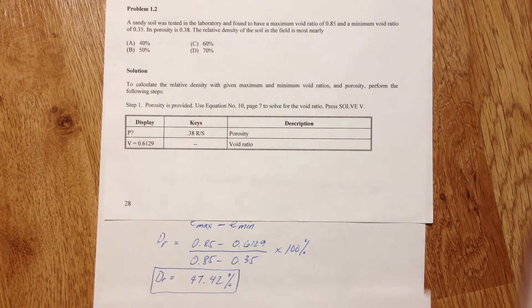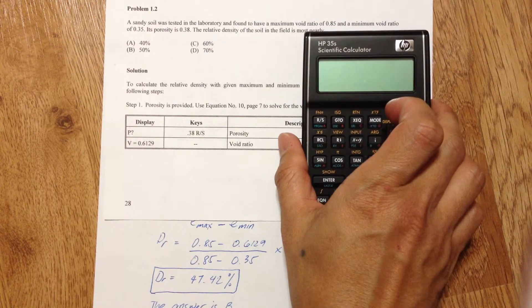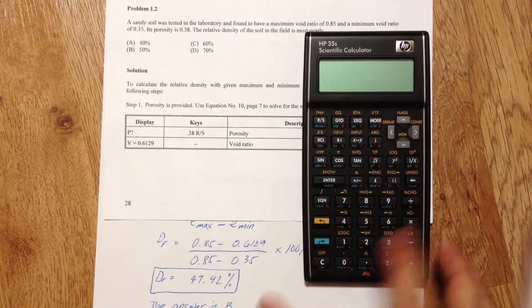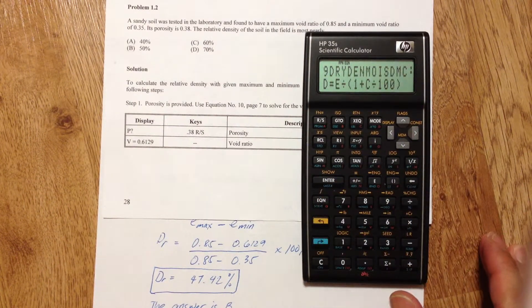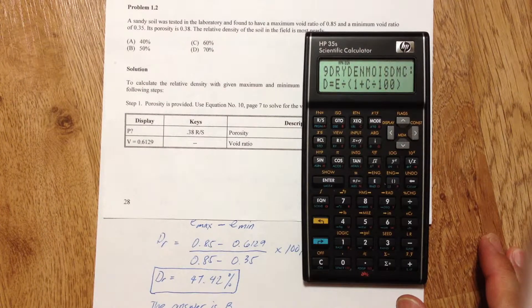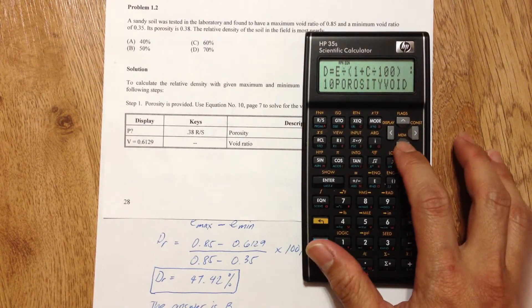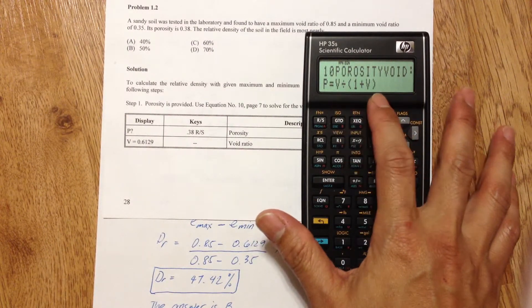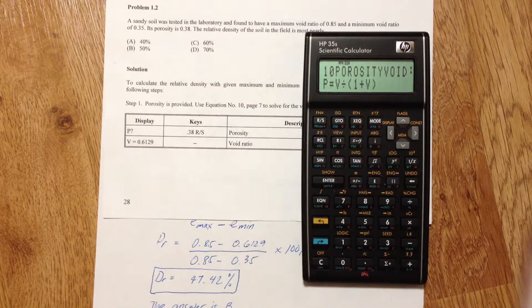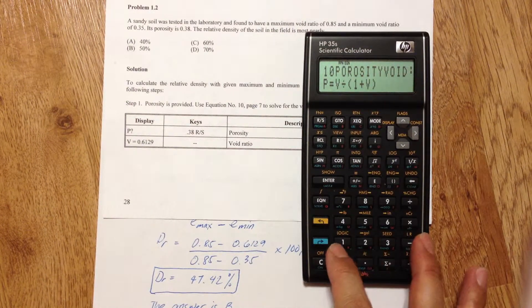Now using the HP 35S calculator in solving this problem, go to the equation list and use equation number 10 to solve for void ratio. By using the porosity equation we can calculate the void ratio given porosity by using the solve function.